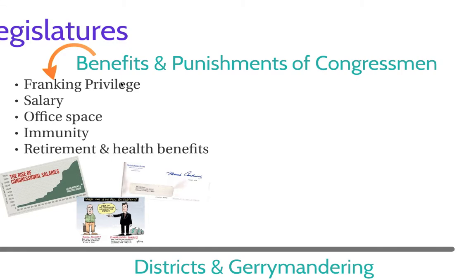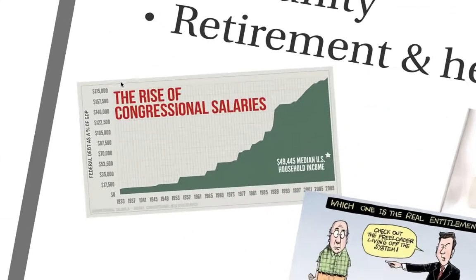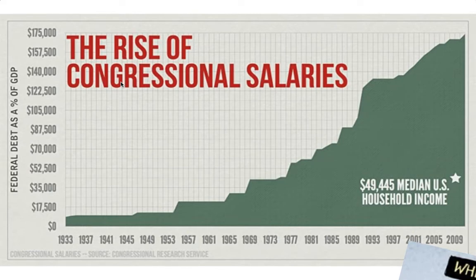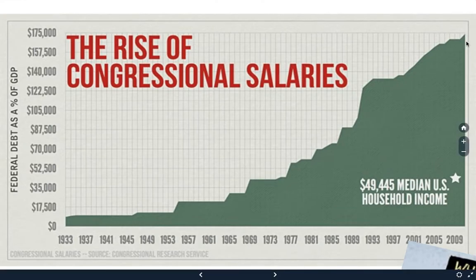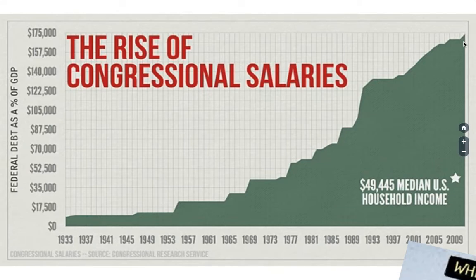They also get very nice health benefits and retirement. As you can see in this chart, salaries of Congress since 1933 have gone up from right at $10,000 to just under $175,000. Note the star here — $49,445 is the median U.S. household income. That doesn't mean the median income a person would make, but the entire household — husband, wife, children — that is the median income.